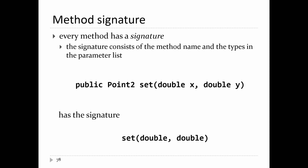There's something called the signature of the method, which is very important. The signature consists of the method name followed by the types in the parameter list. The names of the parameters are irrelevant as far as the signature is concerned. For our set method, it has two parameters both of type double, so the signature is: set(double, double).